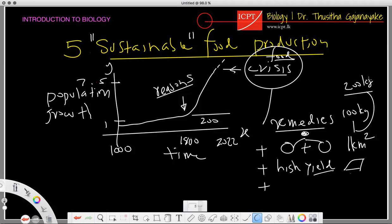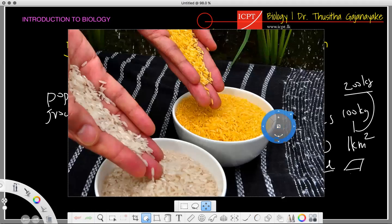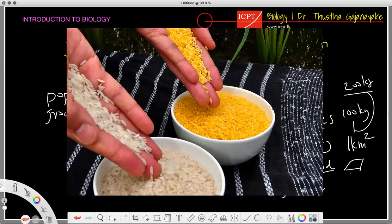The other thing is genetic modification - genetically modified food, right? I think some of you heard about this golden rice. You can see the normal rice here and this one is golden rice. What is golden rice?